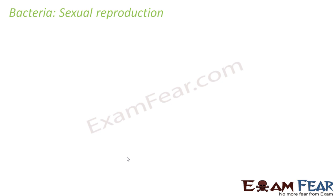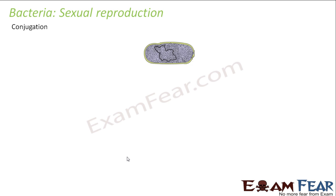Now let us look at sexual reproduction in bacteria. In some bacteria, a process called conjugation is seen where the transfer of genetic material takes place — that is how sexual reproduction happens. For asexual reproduction, one parent can give rise to new organisms, but for sexual reproduction, I need two parents.